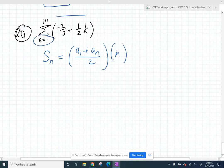We can always get the first term by plugging in that bottom number, so negative two-thirds plus one-half times one, and you've got to deal with some fractions, so we'll get a common denominator of six, so that's negative four-sixths plus three-sixths is negative one-sixth. That's my first term.